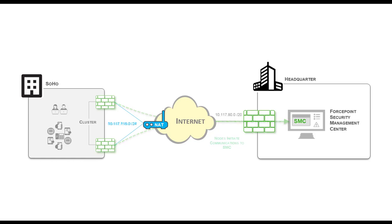Now this is the demo setup that we will be taking a look at today. It is much simpler than what we expect a customer to deploy. It has a single NAT device and a two node firewall cluster behind this NAT. The SMC is on a different network and cannot directly access the firewall nodes.